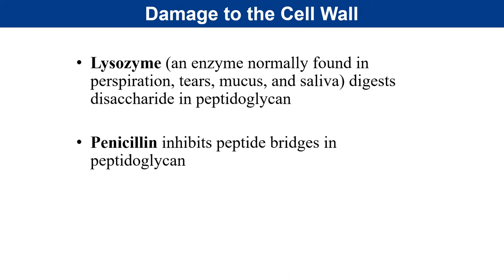Long before antibiotics were discovered, nature evolved a mechanism called lysozyme. Lysozyme is an enzyme secreted throughout perspiration, skin, tears, mucus, and saliva. It is effective at digesting peptidoglycan, especially against susceptible gram-positive bacteria. Lysozyme has been shown experimentally to be ineffective against gram-negative bacteria, probably because of the presence of the outer membrane, which blocks lysozyme from making contact with peptidoglycan.